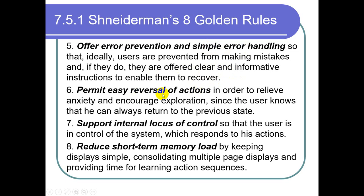Rule 6: Permit easy reversal of action — that is, Control Z. Provide undo to every user so they can explore the software as much as possible. Software that does not allow returning to a previous state makes the user afraid of exploring. With the undo option or Control Z, we can apply easy reversal of actions. In order to relieve anxiety and encourage exploration, the user knows they can always return to the previous state using Control Z.